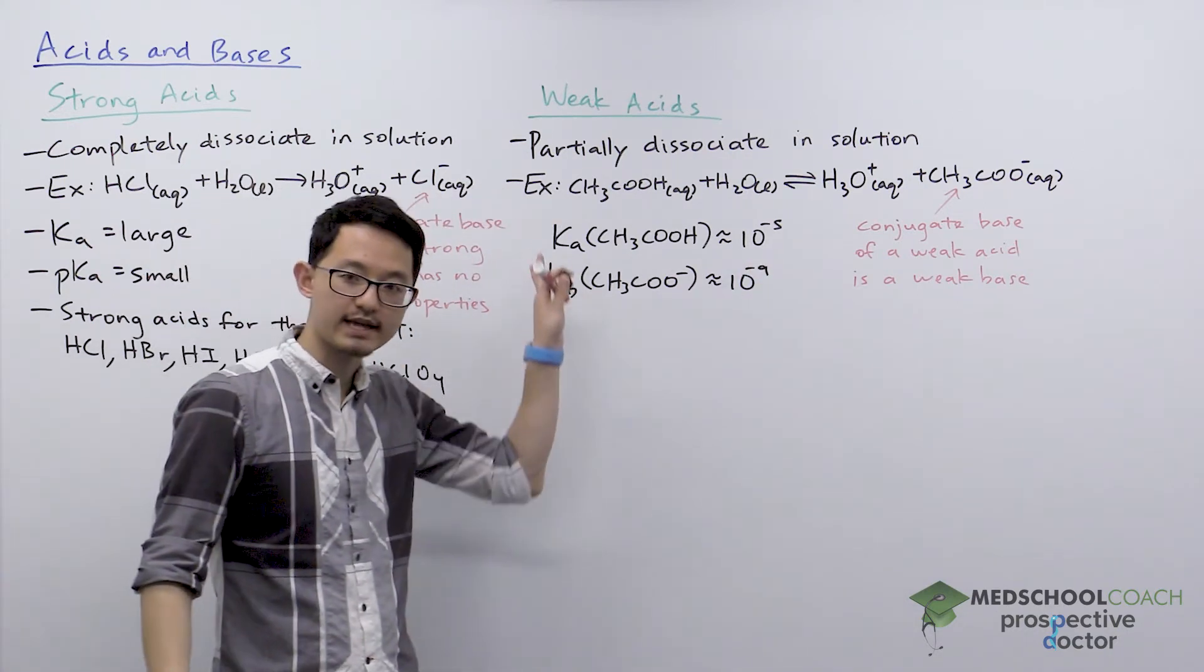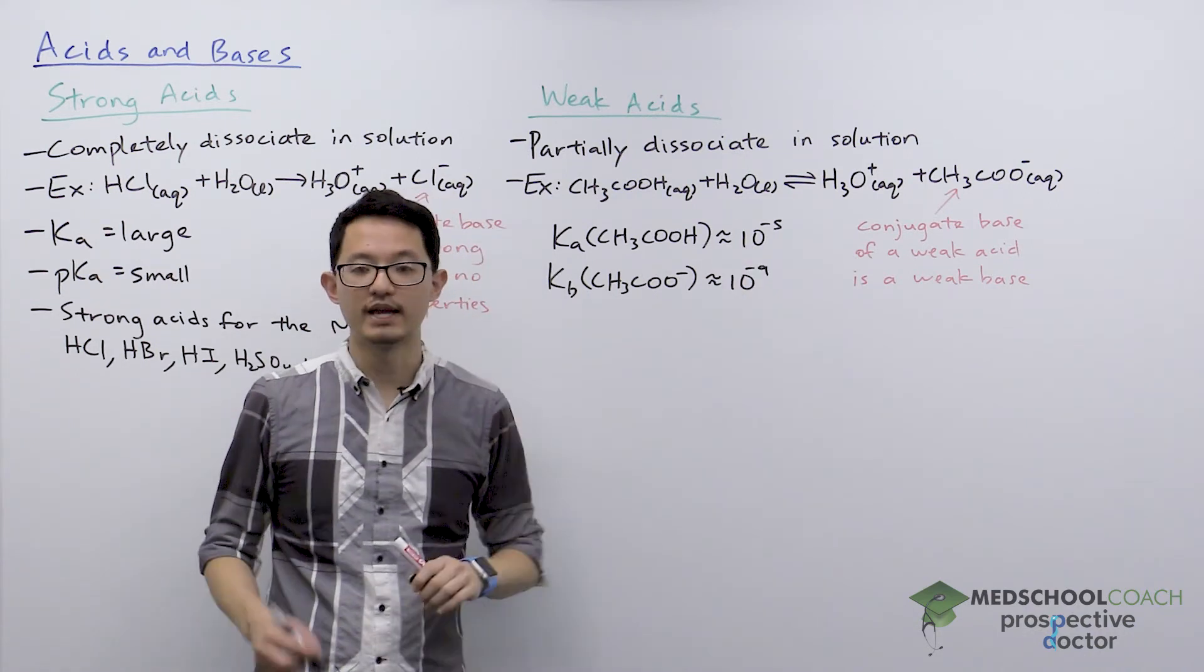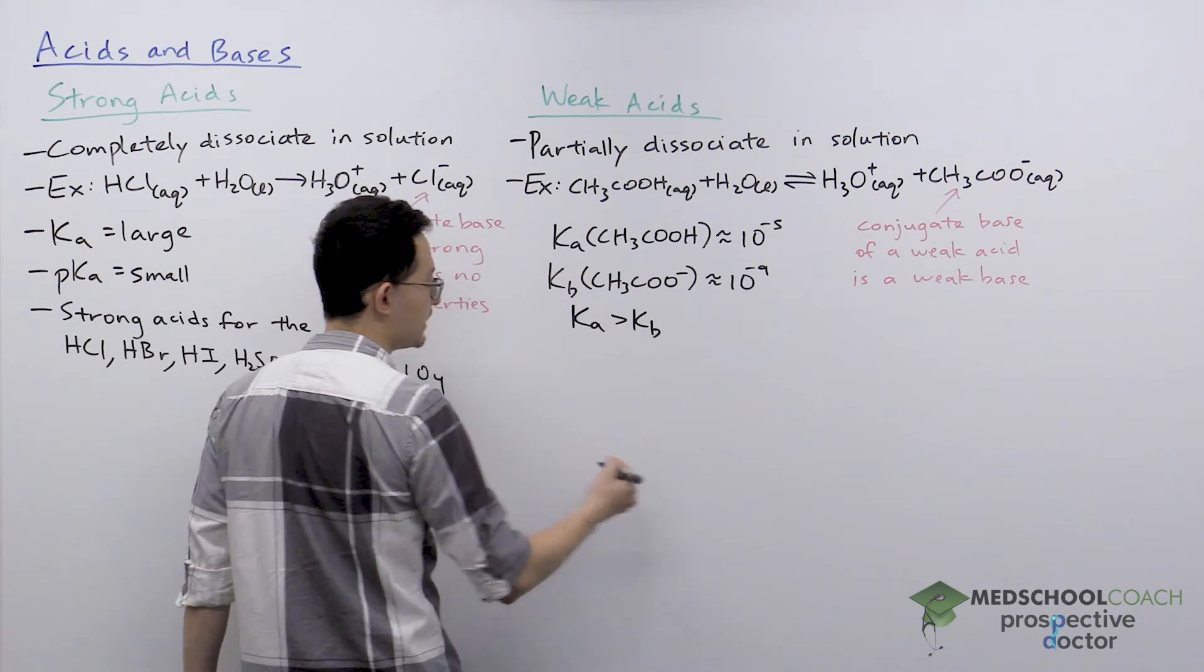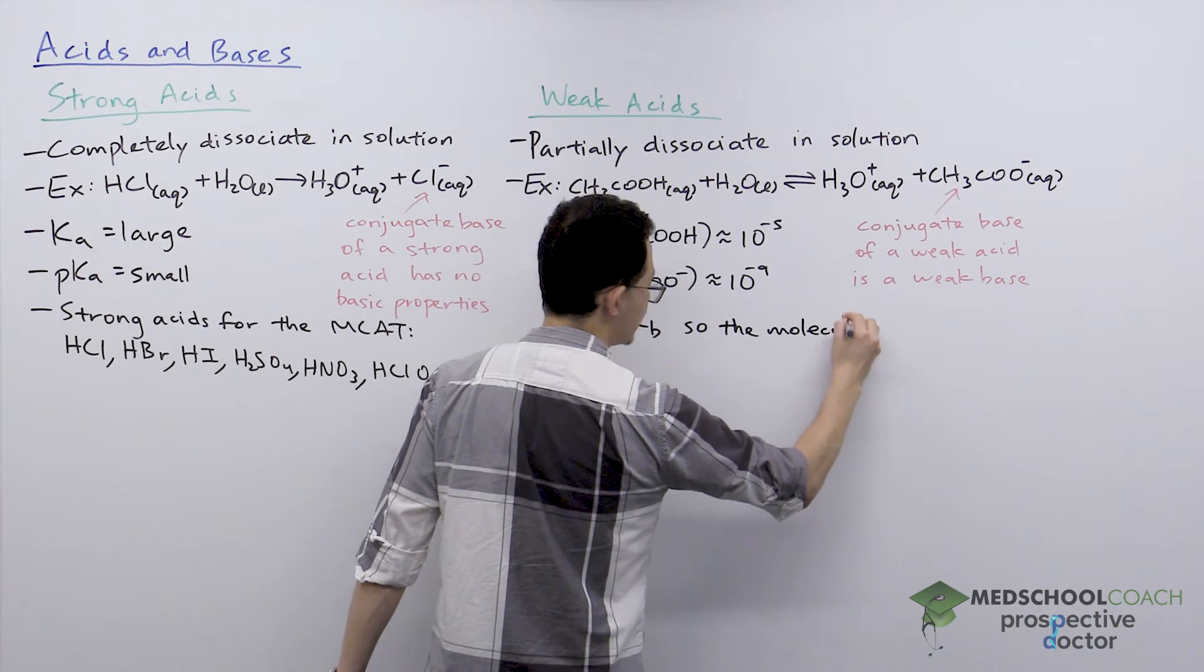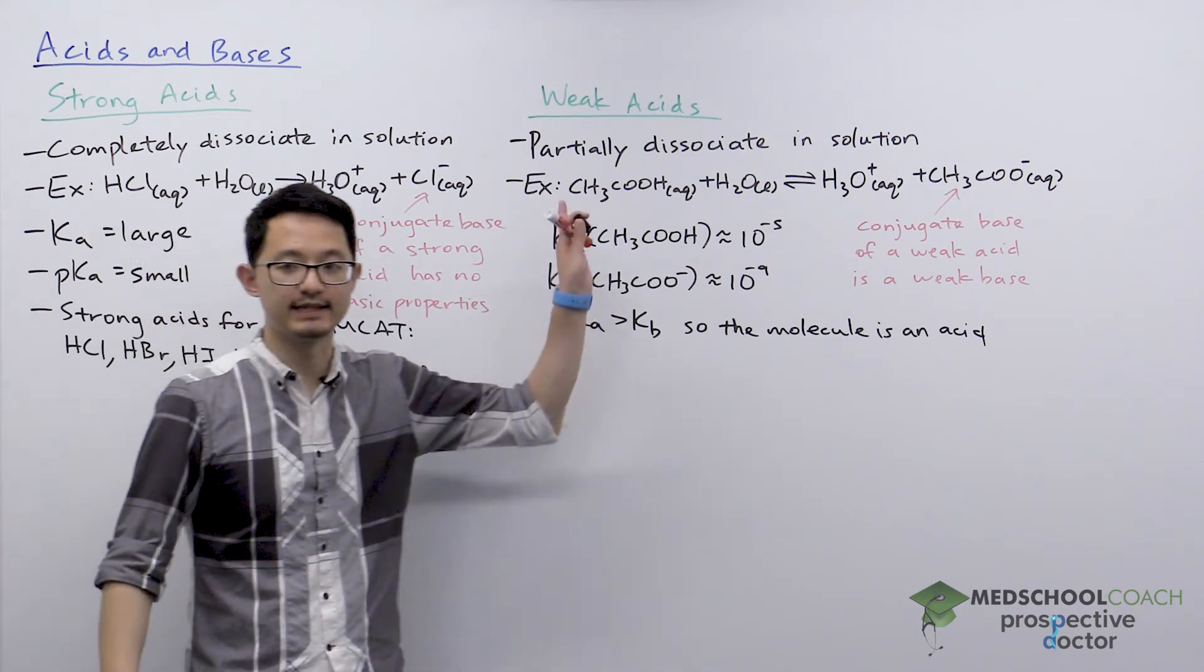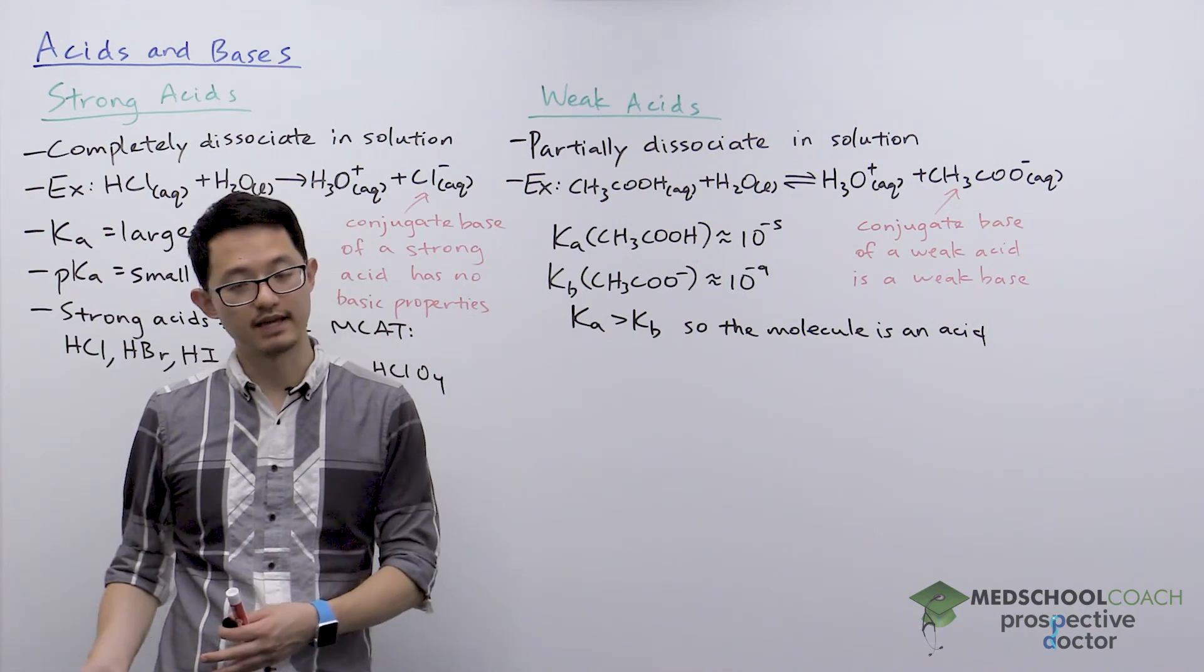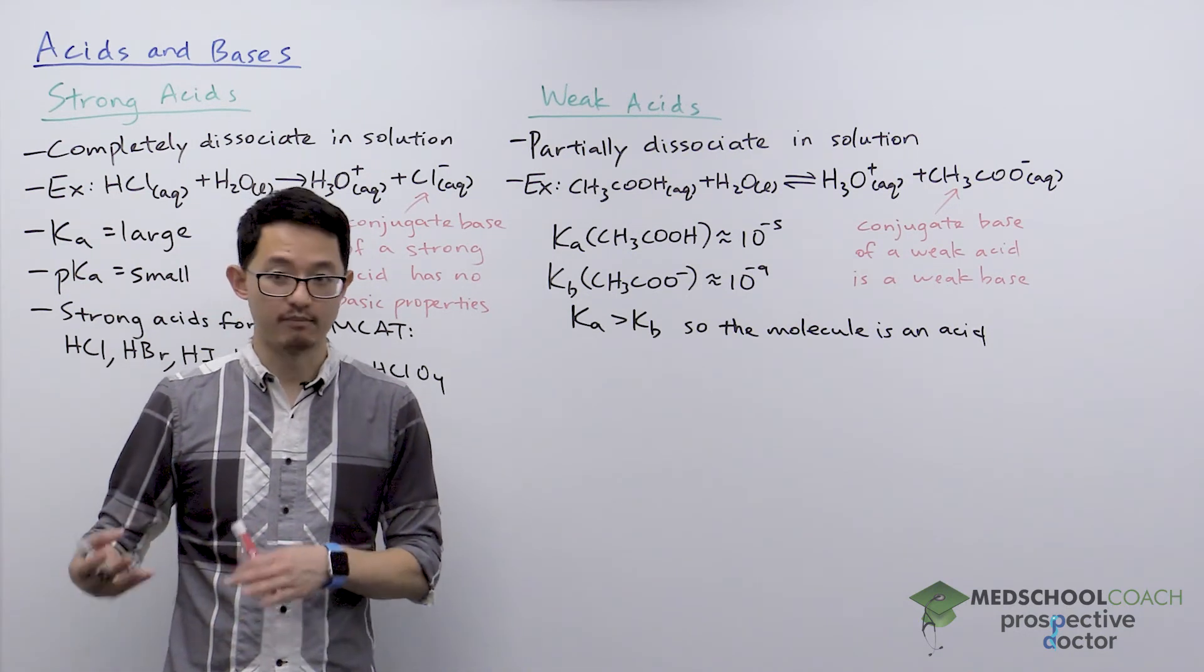Remember, the product of Ka and Kb has to equal 10 to the negative 14. So that's how we get these values here. Now, what you can notice here is that Ka of the acid is stronger than Kb of the conjugate base. So this tells us the molecule is an acid. And that should also make sense because acetic acid has acid in its name. But this is a helpful way to clarify whether molecules are acids or bases. If its Ka is greater than Kb, it's an acid. If the Kb is greater than Ka, then the molecule is a base.